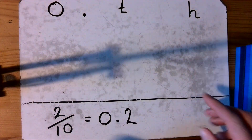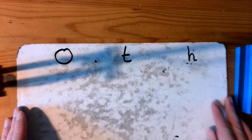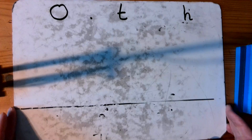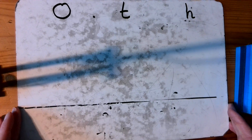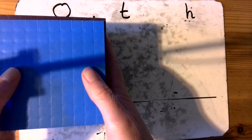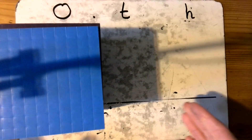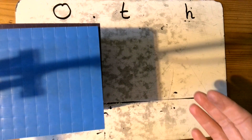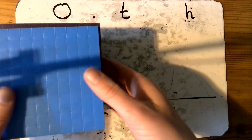How about then if you wanted to look at hundredths? To get hundredths we are going to take our whole — our one whole here — and we are going to split that down into a hundred different parts.